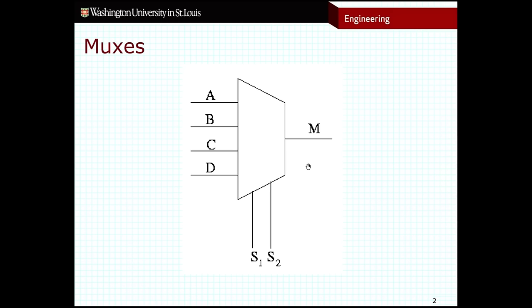The way that a multiplexer works is that exactly one of these inputs will proceed through to the output at any given point in time. The input that's chosen is dictated by these select inputs down here. So for example, if both of these select inputs are zero, I would choose the first input and let that input pass through to the output. These remaining three inputs would be blocked.